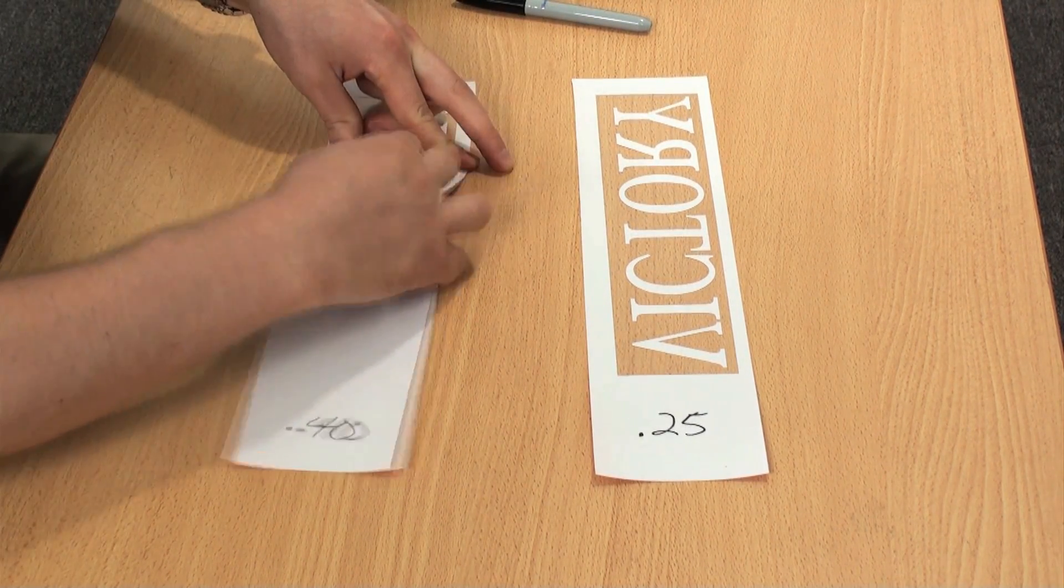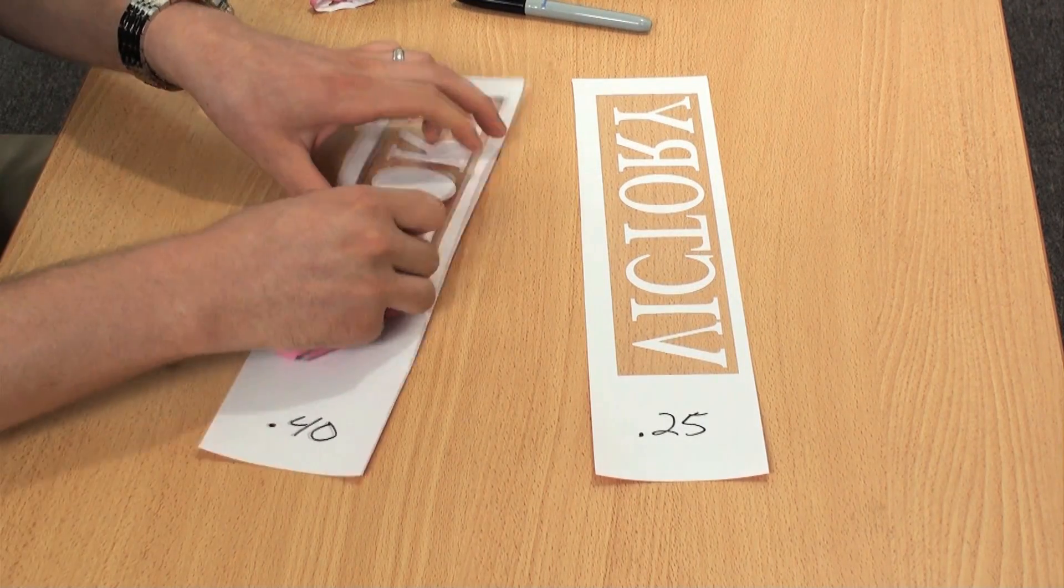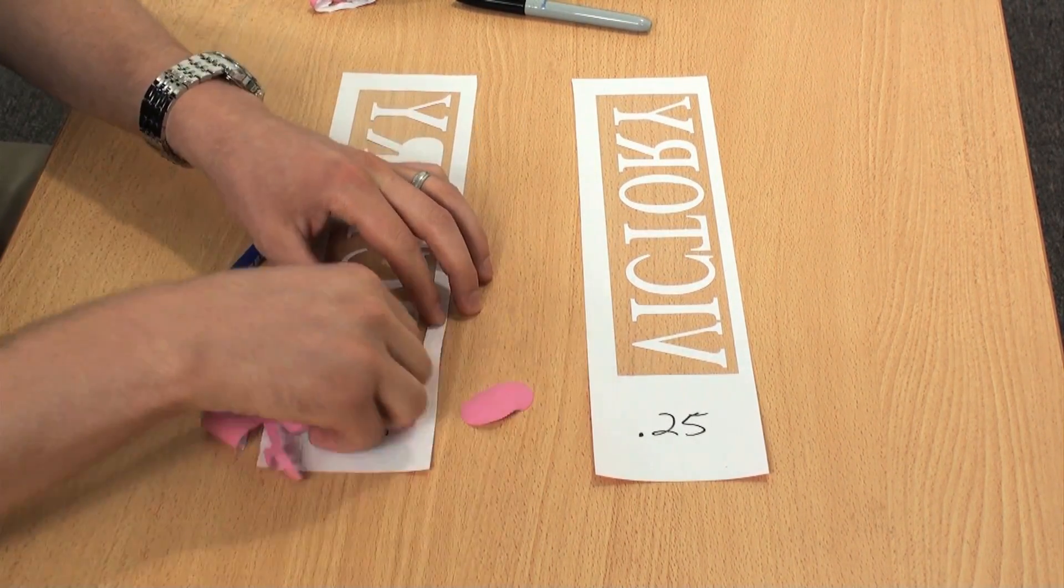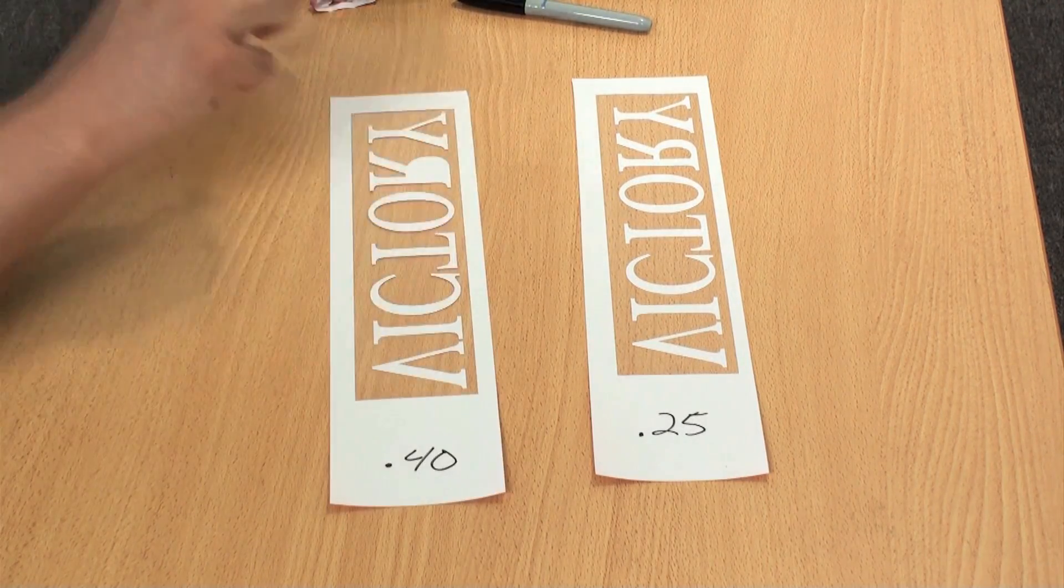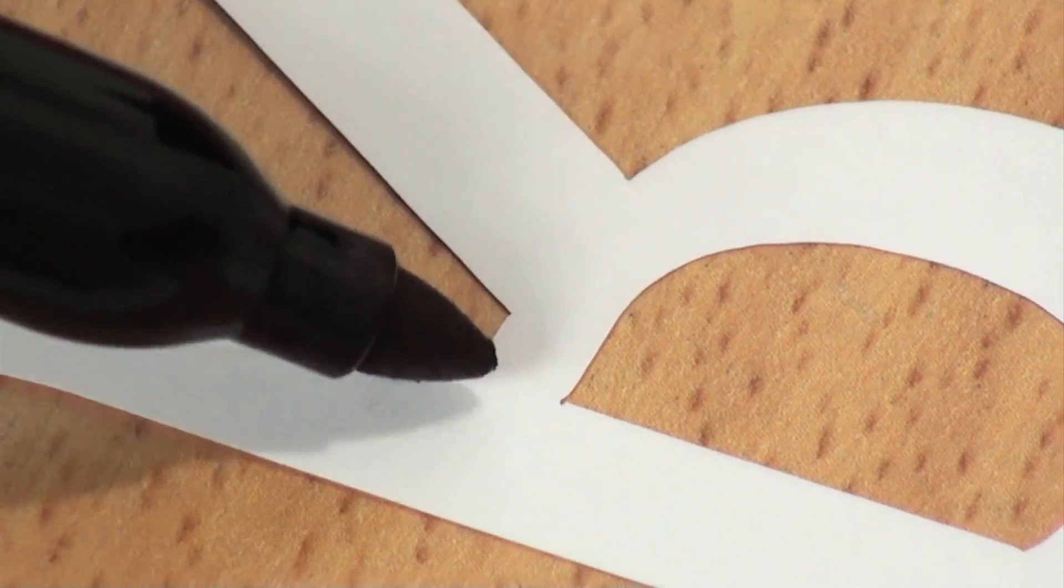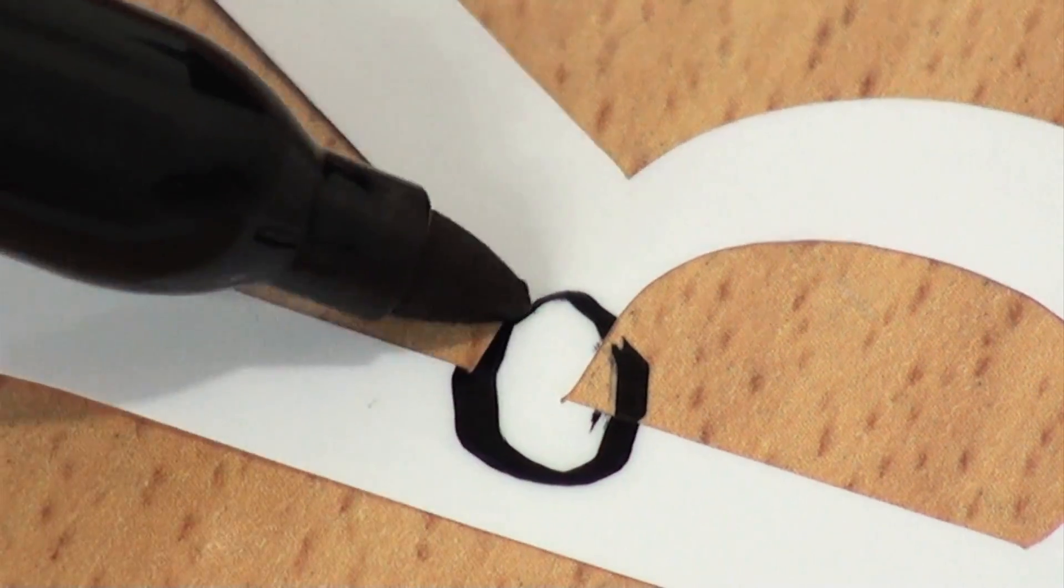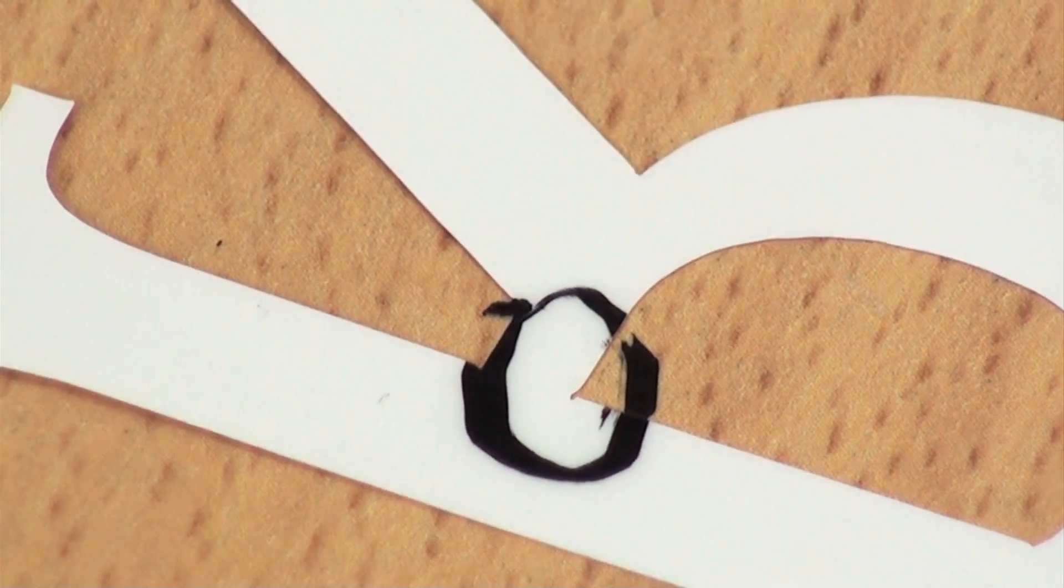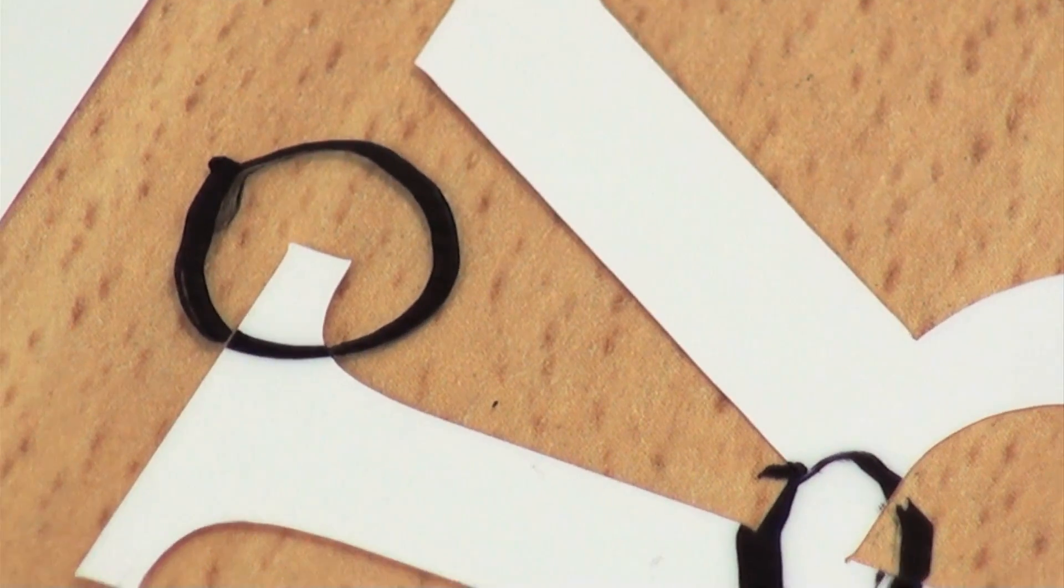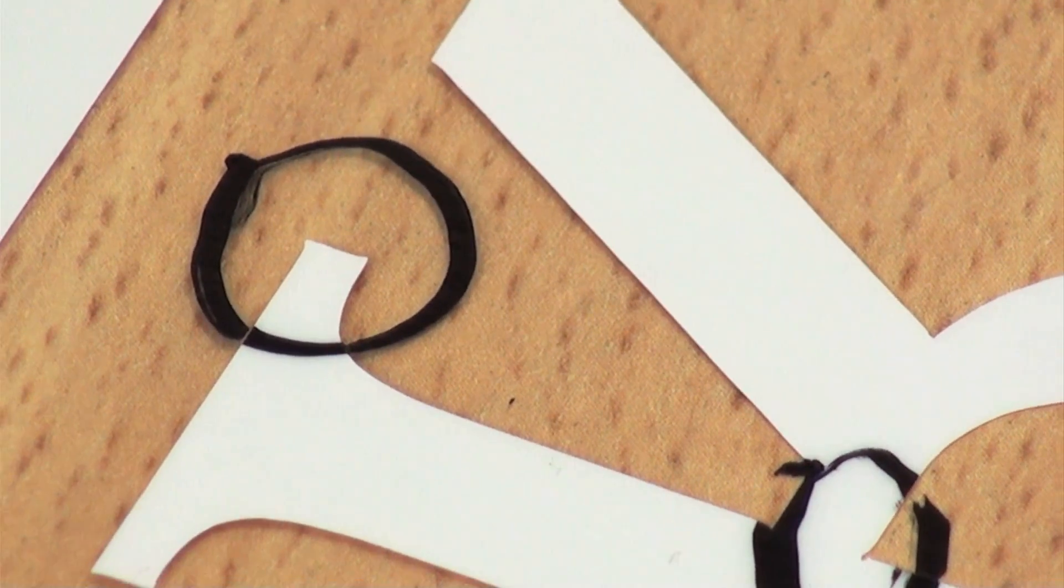The further you get away from the recommended offset, the more difficult it will become to weed your design because of inaccurate corners with the way the machine is compensating for the angle of the blade. And also you'll see some actual inaccuracy in the quality of the work. Look at this indent on this R. That's because of inaccurate offset.